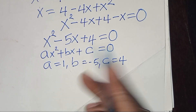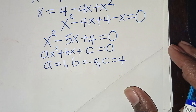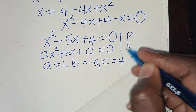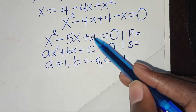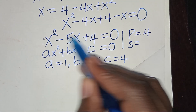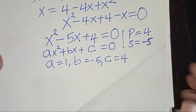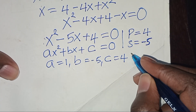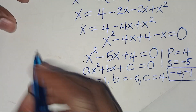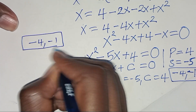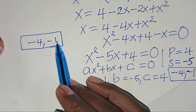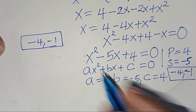We can solve this quadratic easily by factorization using the product and sum rule. We need two factors whose product equals 1 times 4, which is 4, and whose sum equals negative 5. Those two numbers are negative 4 and negative 1, since negative 4 times negative 1 is 4, and negative 4 plus negative 1 is negative 5.